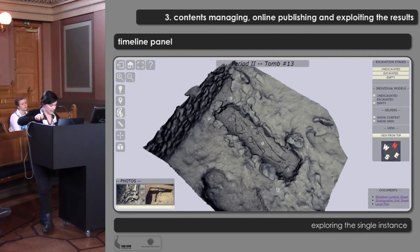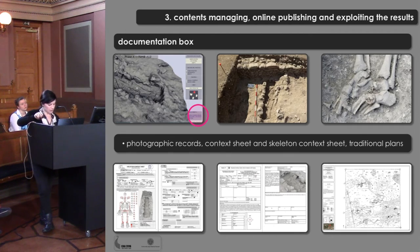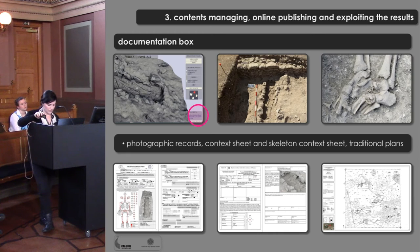Another interesting possibility is to manage a single evidence, such as a single burial like tomb number 13, here displayed. This belongs to the late medieval period and you can see separately the fill, the skeleton, and the empty trench. For each context, it is possible to access through the documentation box all the related recording documentation. For instance, for context number 5212 belonging to tomb 13, the following contents are available: context sheet and skeleton sheet, both in 3D PDF format which include a lower-resolution 3D model of the skeleton, a traditional plan in which the context is drawn, and photographic records.